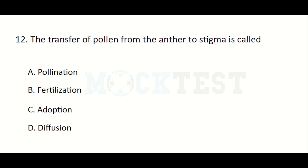The transfer of pollen from the anther to stigma is called — Option A: Pollination, Option B: Fertilization, Option C: Adoption, Option D: Diffusion. The answer is Pollination.